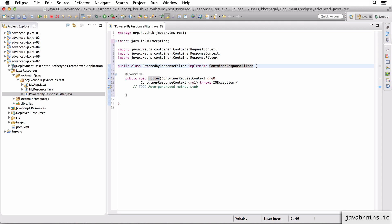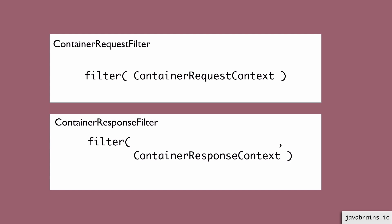Here you have a chance to modify the response and add a header value. The parameters to this filter method depend on whether it's a request filter or a response filter. In the case of a request filter, the JAXRS framework sends an instance of ContainerRequestContext — basically a context object containing details about the request. In the case of a response filter, you get two context objects: one is the request context and one is the response context. Since the response filter is called after the response is prepared, you have access to both the request context and the response context, so you can actually tweak and modify both.